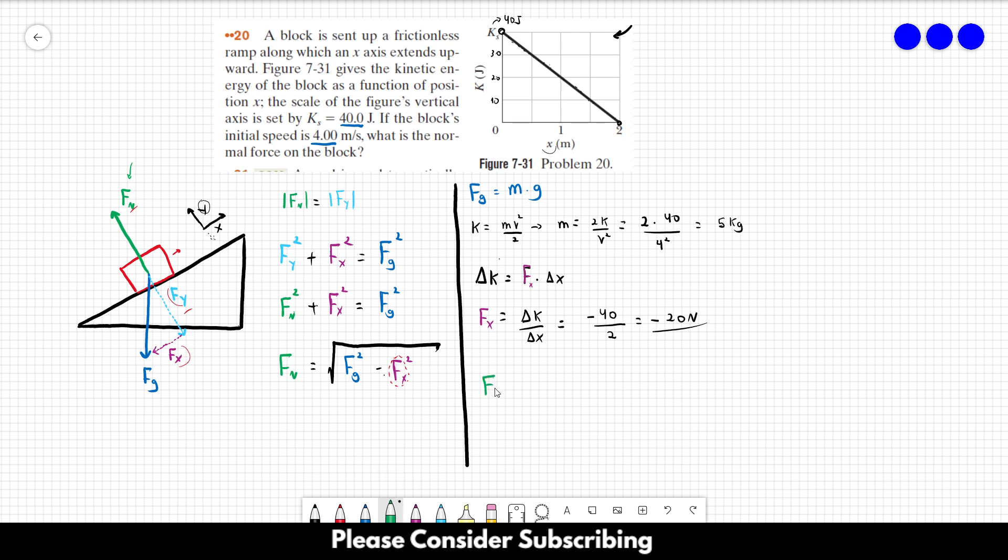So this is equal to the square root of mass, which is 5 times gravity, which is 9.8 squared minus Fx, which is minus 20 squared. And you just take the square root of this value. And then you would find 44.7 newtons. And that's how you solve this problem.